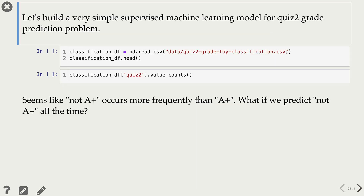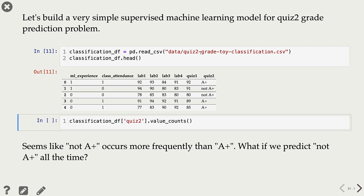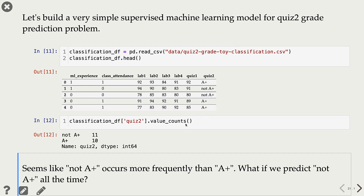Let's build a very simple supervised machine learning model for our toy quiz-2 grade prediction problem — that is, find a very simple mapping function f to predict labels of new examples. Here is our dataset, where the target column is the Quiz2 column. We look at value counts of this target column and notice that the grade 'not A+' occurs 11 times whereas grade 'A+' occurs 10 times in this data.